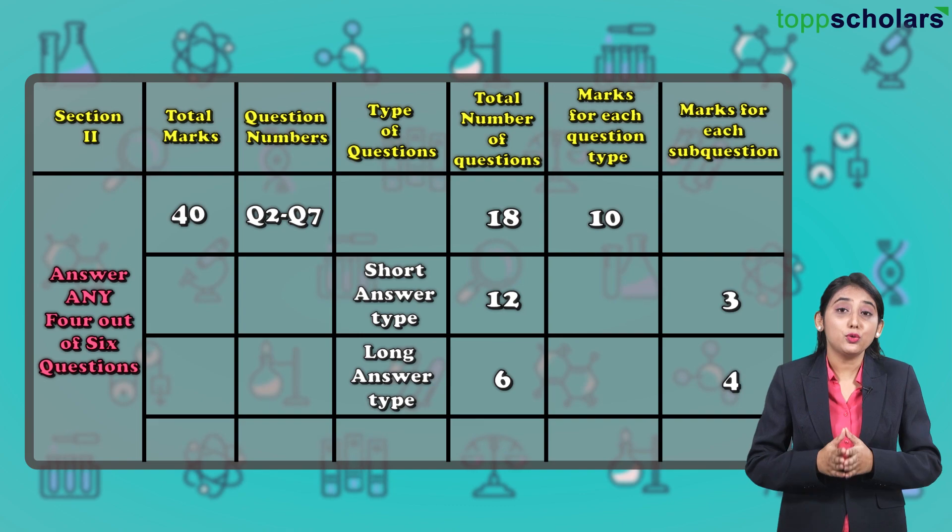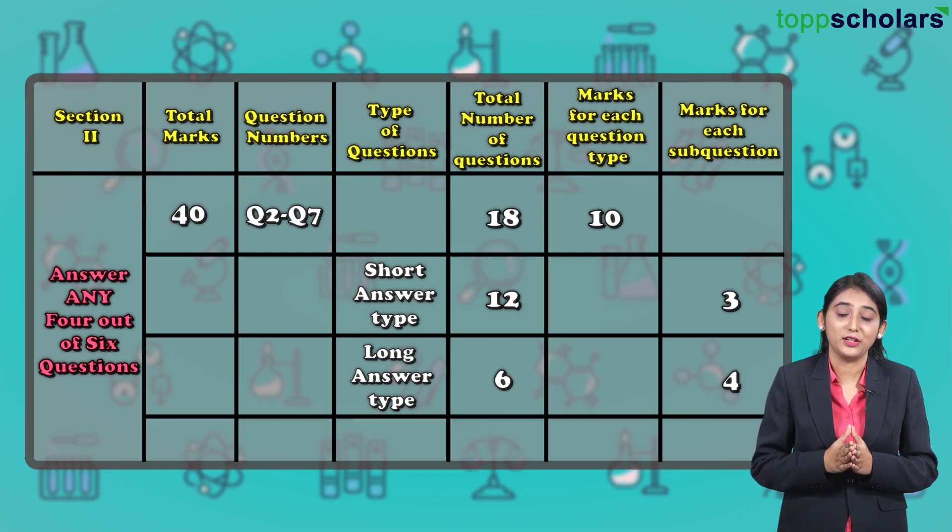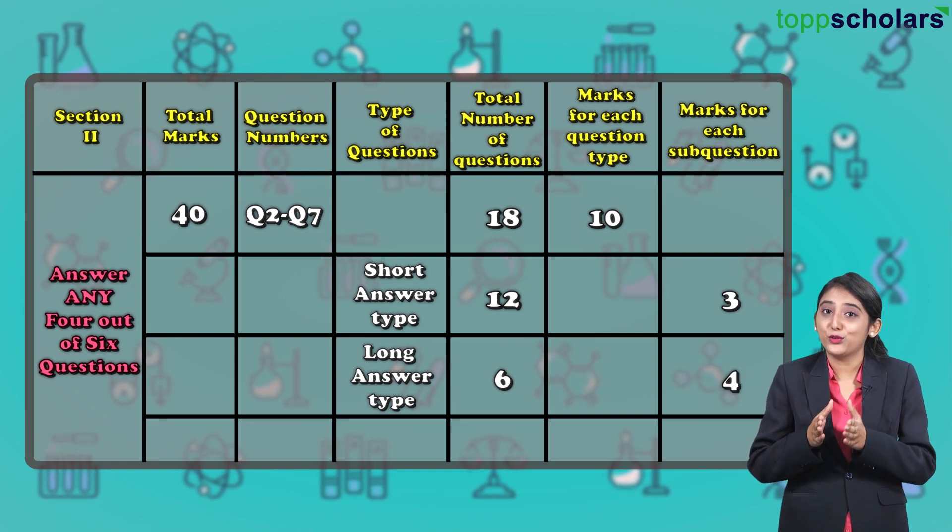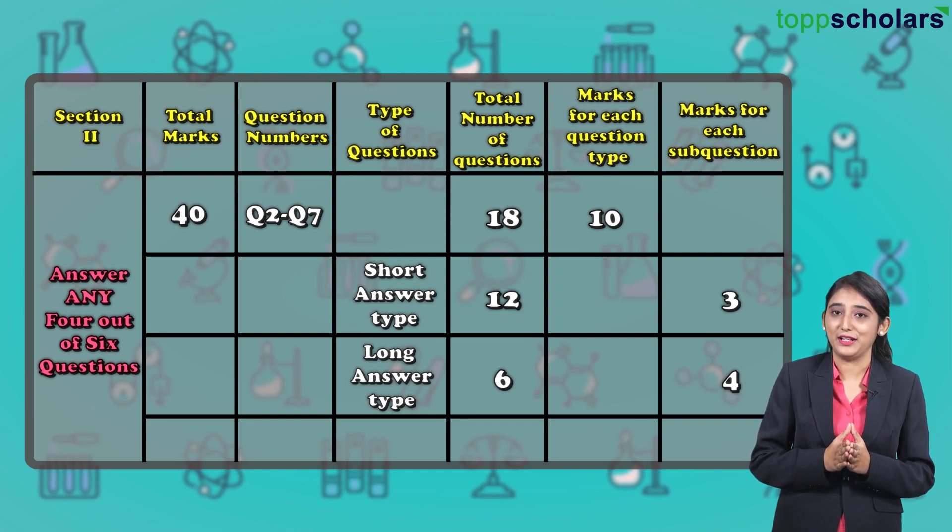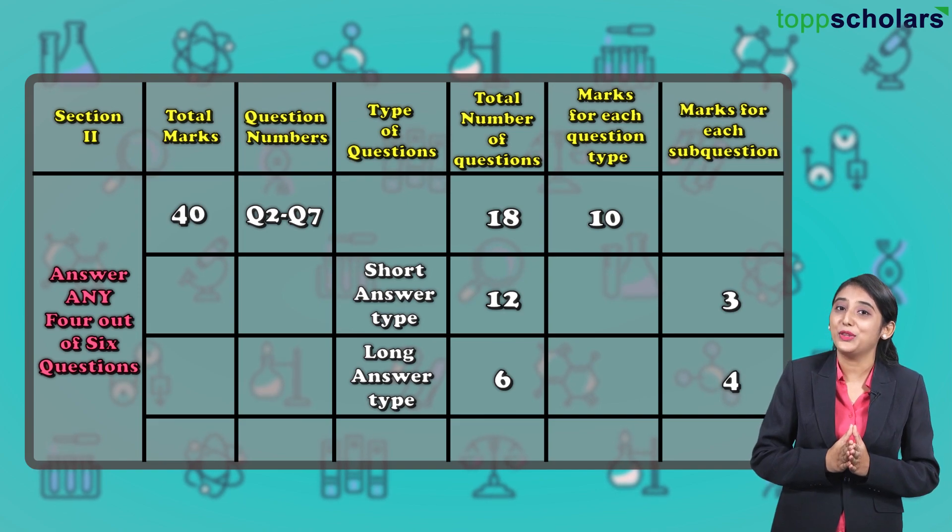That means you have 2 questions for 3 marks each and 1 question for 4 marks each. That means in total, you have 12 questions of 3 marks each and 6 questions of 4 marks each. That is in total, you have 18 questions with options.